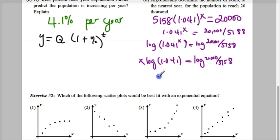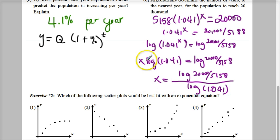Now, I want X by itself, and then I will divide both sides by the log of 5158, and it's going to be divided by the log of 1.041. And if you work this out in your calculator, you will get X to be approximately 34 years.